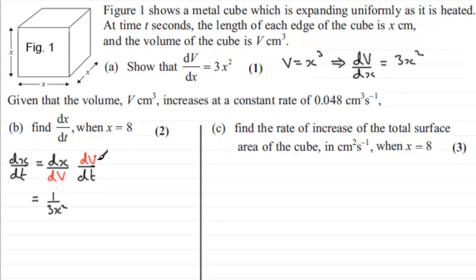Now do we know dV by dt, the rate of change of volume? Well yes, it's given here. Given that the volume V centimeter cubes increases at a constant rate of 0.048 centimeter cubes per second, this is saying that we know that dV by dt, the rate of change of volume, equals 0.048. I'll leave off the unit centimeter cubes per second, but you can tell this dV by dt just by looking at the units. Centimeter cubes is a measure of volume, and then you've got s to the minus 1, which is per second, the measurement of time.